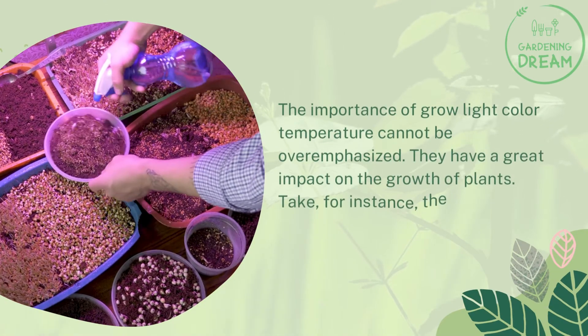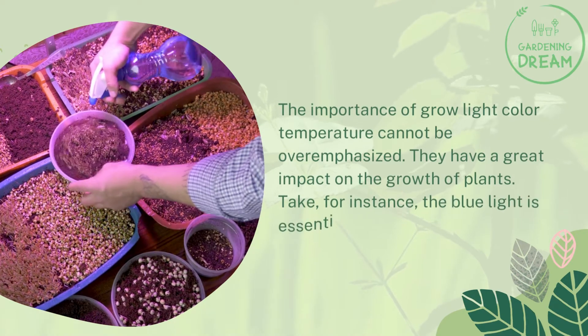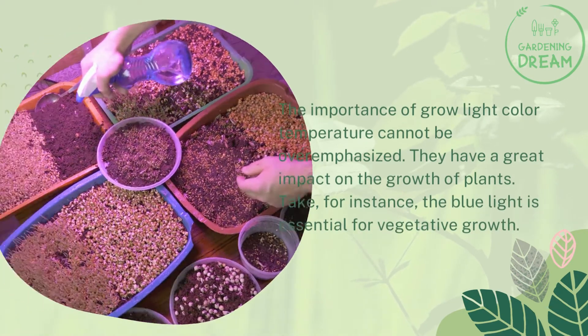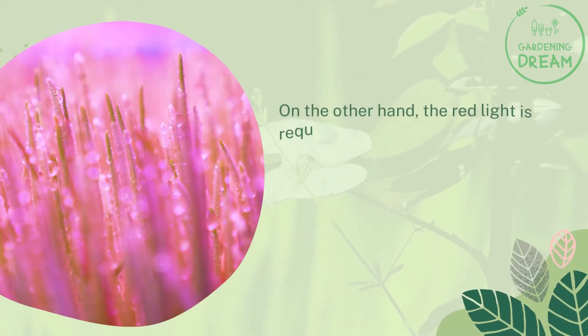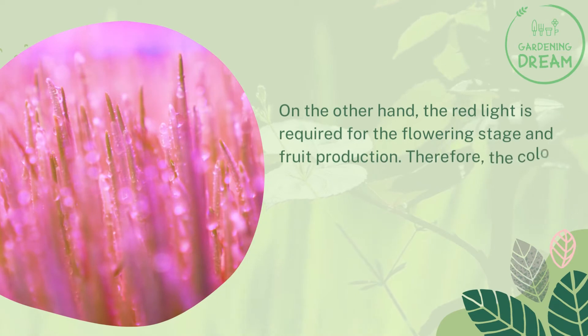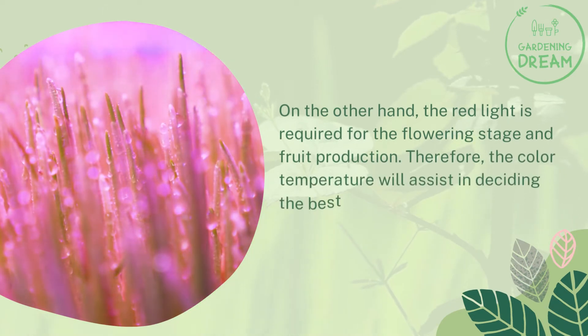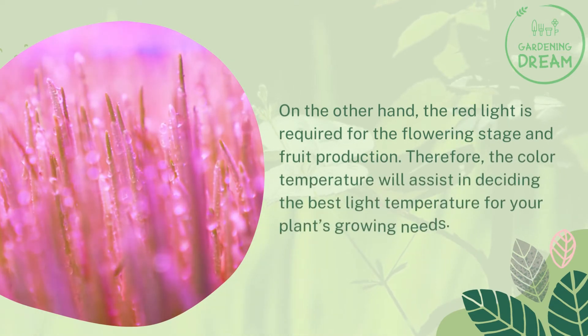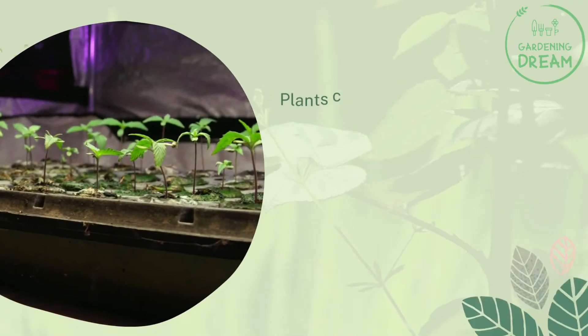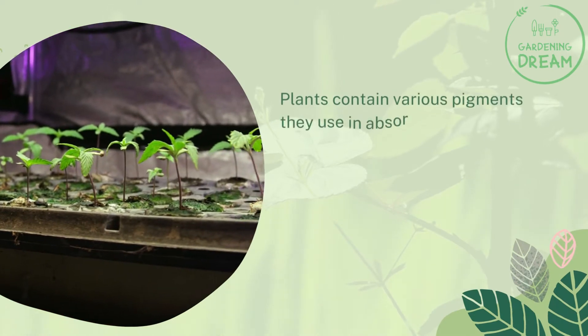Blue light is essential for vegetative growth, while red light is required for the flowering stage and fruit production. Therefore, the color temperature will assist in deciding the best light temperature for your plants' growing needs.